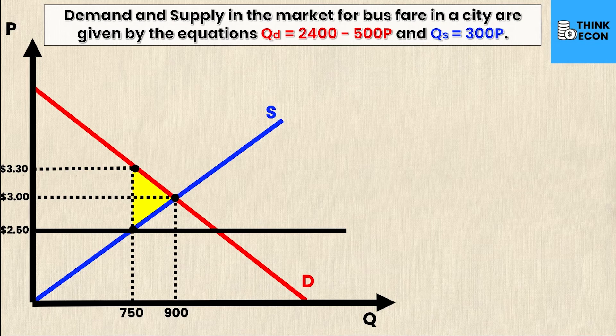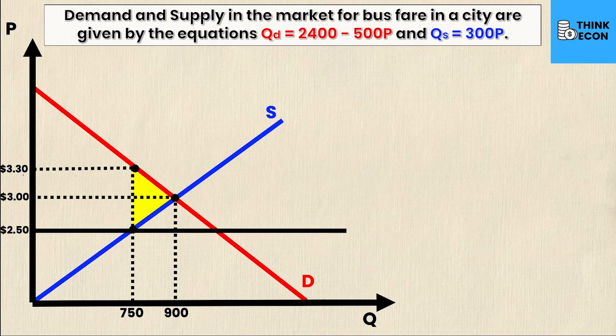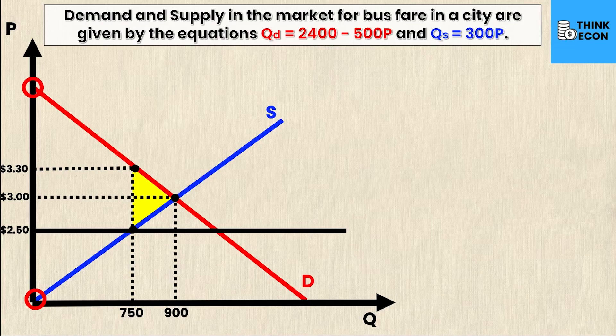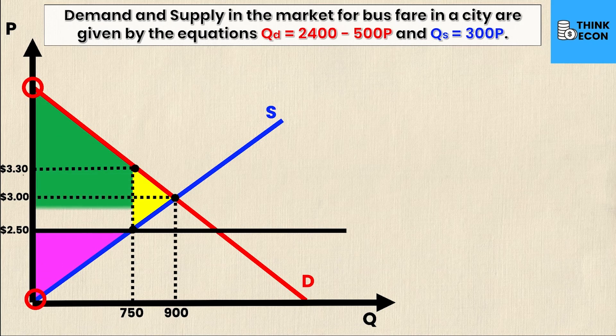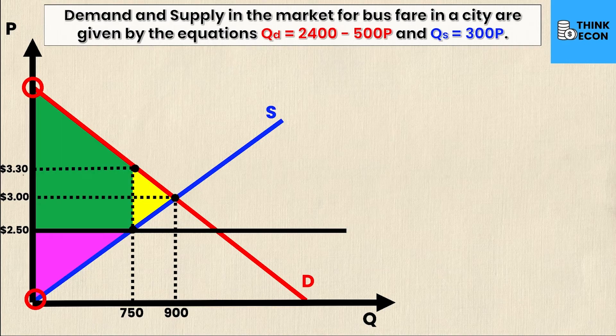Two important values that we did not calculate in part one are this intercept and this intercept right here. Specifically where the demand intersects the p-axis and where the supply curve intersects the p-axis. Once I've found these two values, I can calculate my consumer and producer surplus, which is denoted by the green and the pink space.